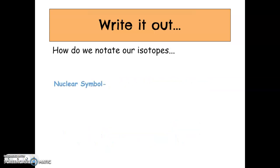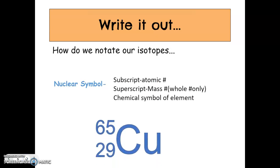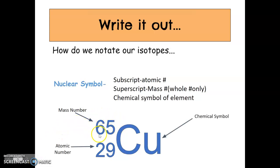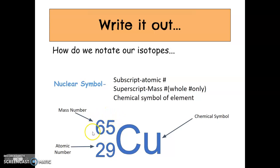We also have something called a nuclear or nuclide symbol, and this has three different components. It has a subscript, which is the atomic number, on the bottom. It has a superscript — super means above — so that's the mass number. And then it has the chemical symbol of the element. So for copper-65, on the bottom we have our atomic number, also the number of protons. If we look on the periodic table and find atomic number 29, it's associated with copper. The mass number tells us the weight of the nucleus — it's the number of protons plus the number of neutrons.